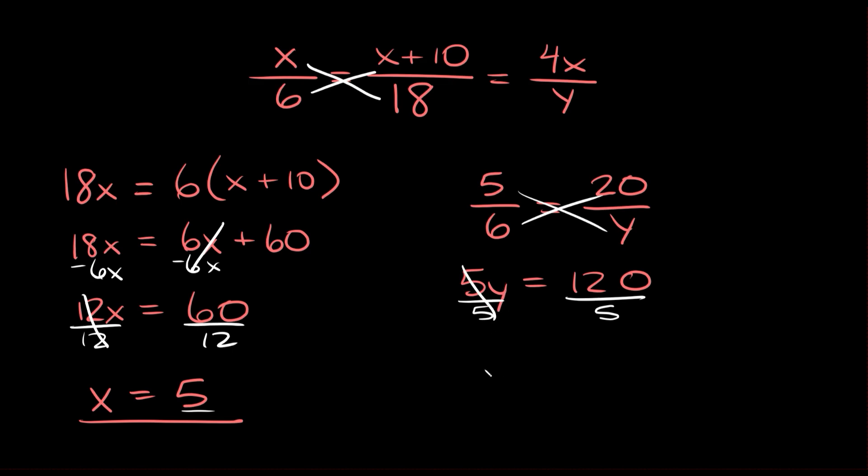Those cancel out. So we get that y equals 24. Kobe!